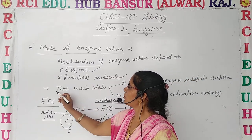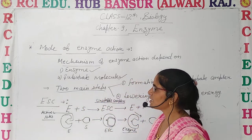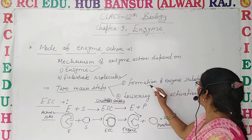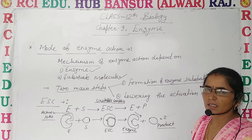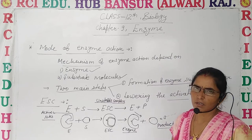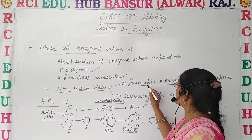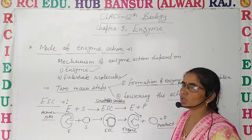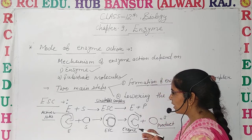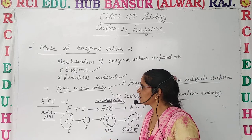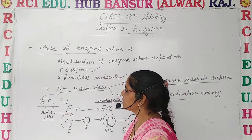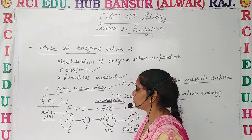The mechanism of enzymes takes place through two steps. The first step is the formation of the enzyme-substrate complex, and the second step is the lowering of activation energy. So the first one is the formation of the enzyme-substrate complex. Let's discuss how the enzyme-substrate complex is formed. This enzyme-substrate complex is an unstable compound.